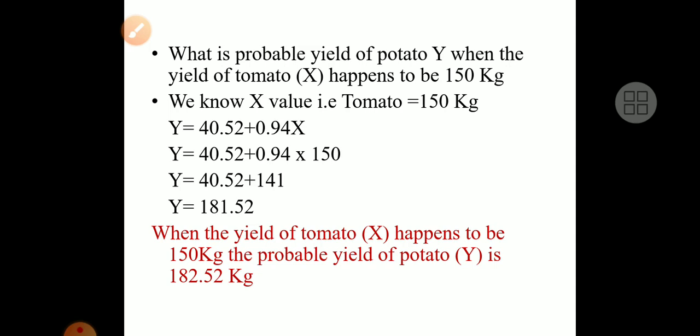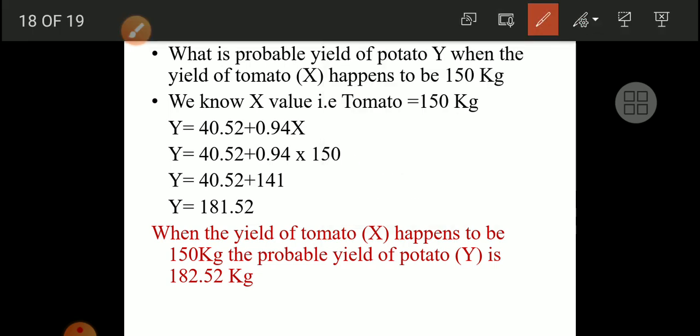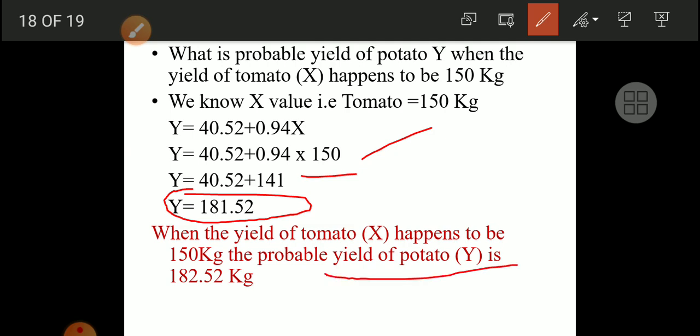What is the probable yield of potato y when the yield of tomato x happens to be 150 kg? Since x equals 150, substituting into y equals 40.52 plus 0.94x: y equals 40.52 plus 0.94 times 150, giving y equals 181.52 kg. So when the yield of tomato is 150 kg, the probable yield of potato is approximately 181.52 kg. Practice these problems — practice makes man perfect.